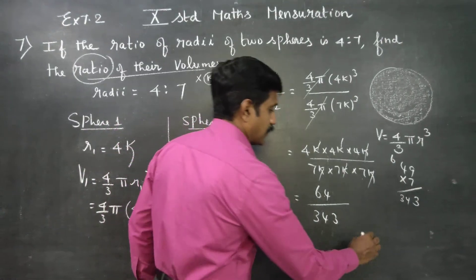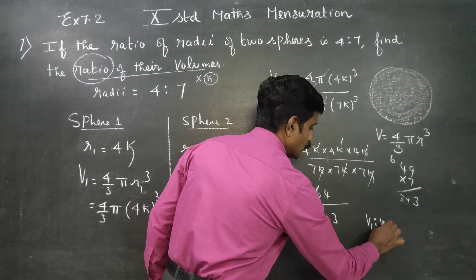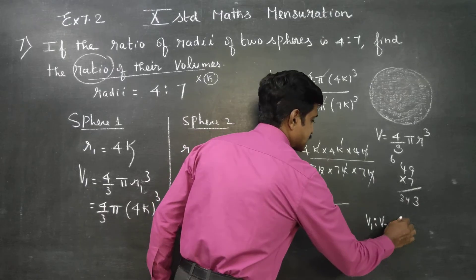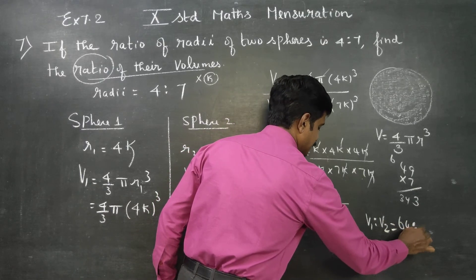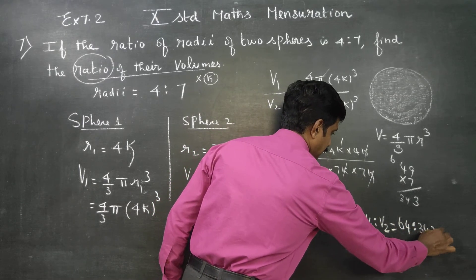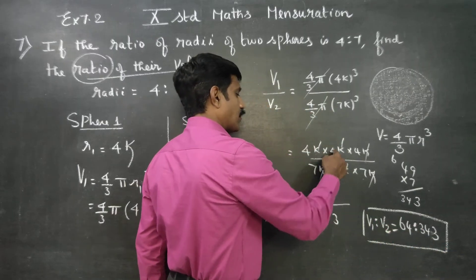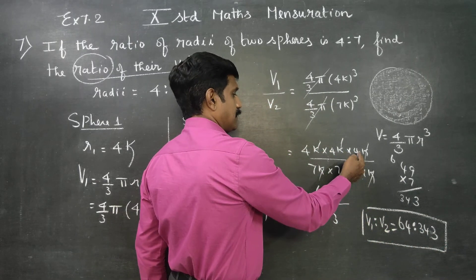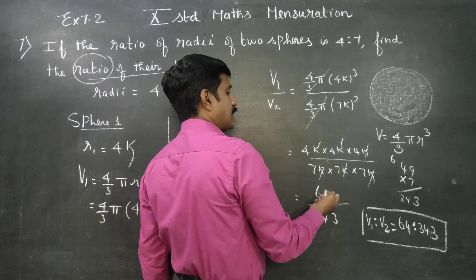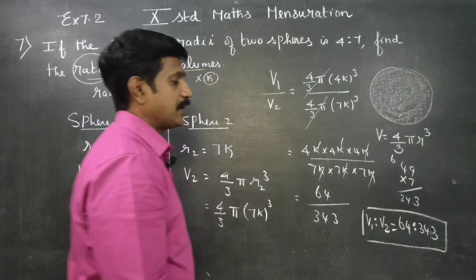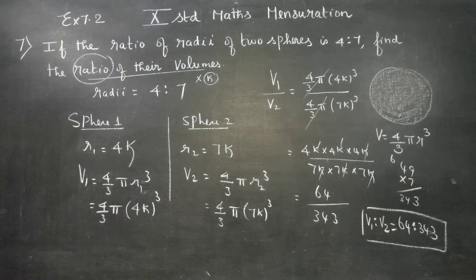That is, the ratio of V1 to V2 is equal to 64 is to 343. If you put this ratio, your answer is 64 is to 343. Thank you.